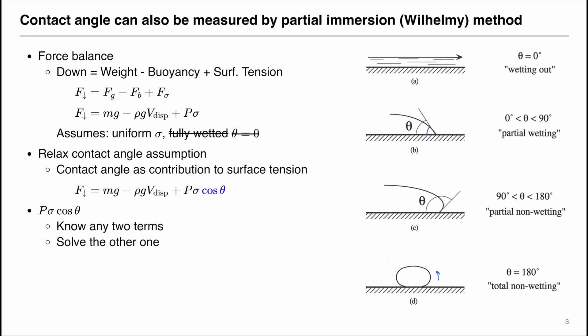Contact angle indicates how much the surface tension force acts in the horizontal and vertical components. Therefore, in the original force balance, we add the cosine of the contact angle, or cosine theta, to the surface tension force, so that we only consider the contribution of surface tension in the downward component. We can measure the downward force using an electro balance, as well as the gravitational force and buoyancy force. In the surface tension force term, we have the wetted perimeter, surface tension, and contact angle — if we know any two of those, we can solve for the other one.